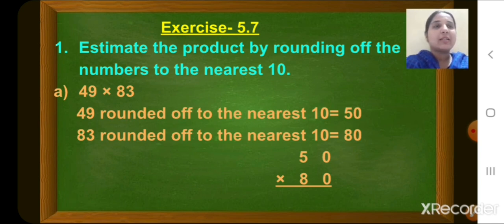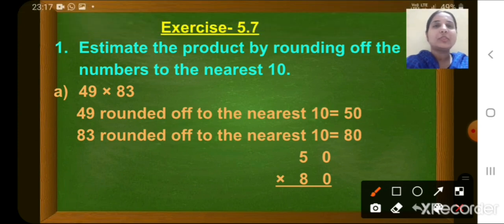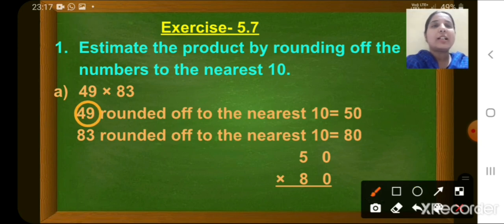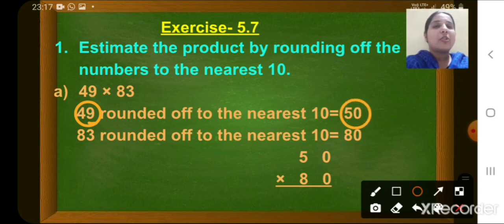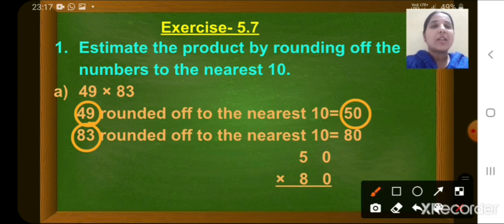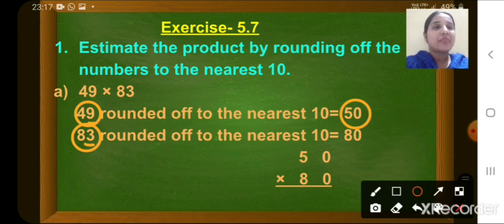Question number A is 49 multiplied by 83. First we will round off number 49 to nearest 10. Look at the digit at the 1's place, which is 9 here. So the round off of 49 to nearest 10 will be 50. Now look at the second number, which is 83. The digit at the 1's place is 3, which is less than 5. So the round off of 83 to nearest 10 will be 80.